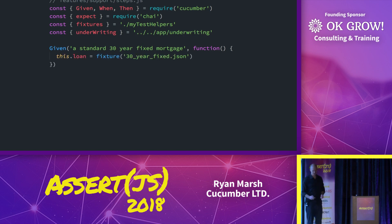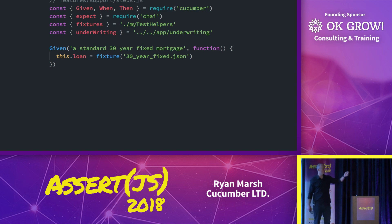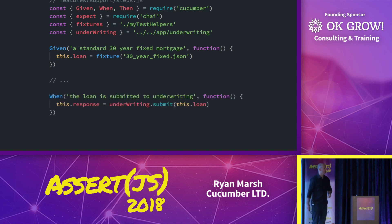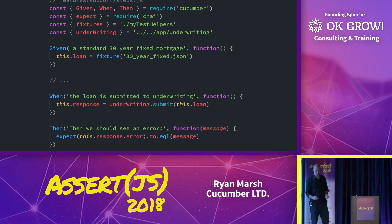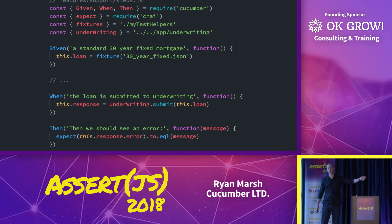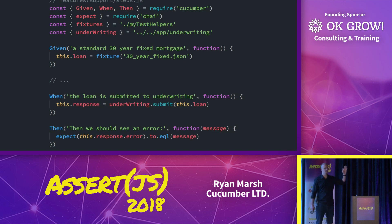What's going to be in that given function? Maybe we have a data structure that has what a 30-year fixed mortgage is, and we're going to pull that up and set it to 'this.loan'. We had some 'and' steps that could be setting the date of birth, setting the date on the loan. Then we have a 'when' — the loan is submitted to underwriting — which also matches a string and a function. And there's our 'then', which takes a string and a function. The function takes 'message', which was extracted out of the 'then' step. You can use regular expressions here, or some much simpler string expressions.